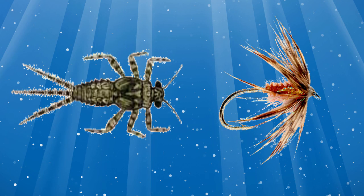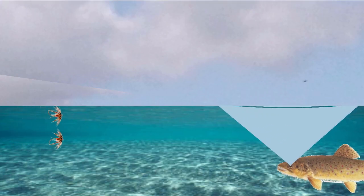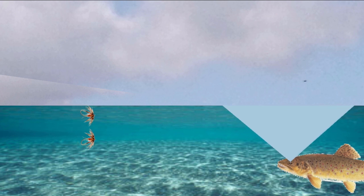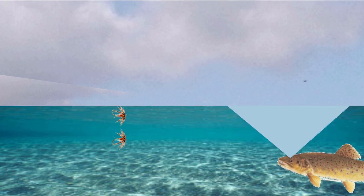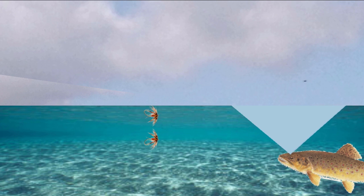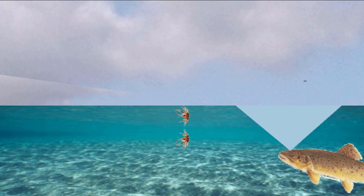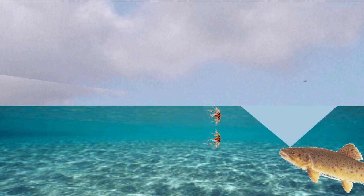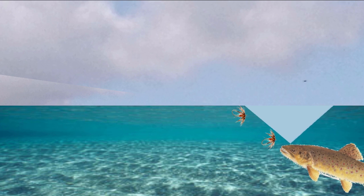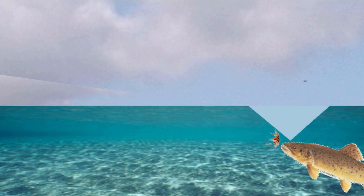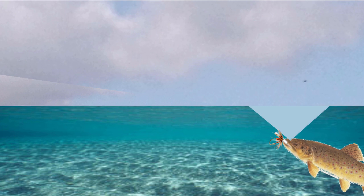Marinaro's theory can also account for how a trout intercepts a natural or artificial fly swimming beneath the surface. As the sunk fly approaches, the fish sees two images, the actual fly and its reflection in the mirror, and then a single image when the fly crosses the edge of the fish's window. By keeping the fly on the edge of the window, the trout stands a very good chance of engulfing the insect.